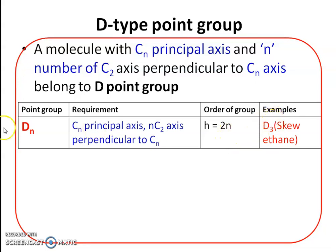An example of the Dn point group is D3. In the D3 point group there must be a C3 principal axis and 3 C2 secondary axes at right angles to the C3 principal axis. Skew ethane belongs to the D3 point group. Among the conformational isomers of ethane — staggered, eclipsed, and skew — skew ethane has one C3 principal axis and three C2 secondary axes perpendicular to C3, and therefore belongs to D3.